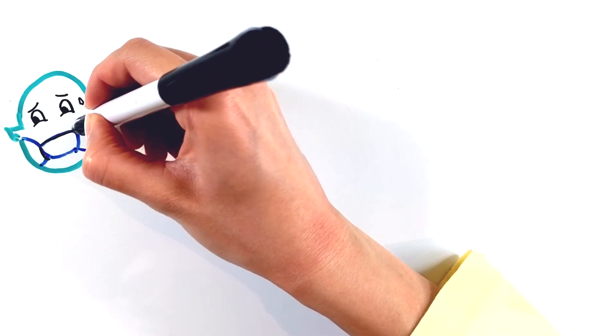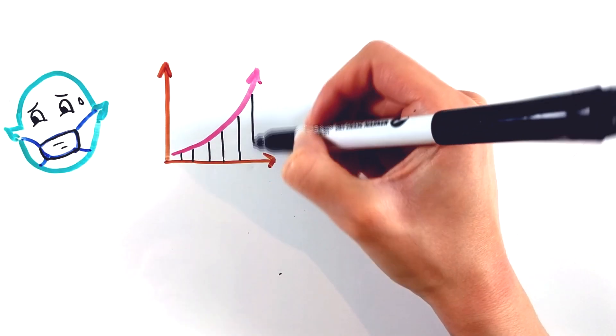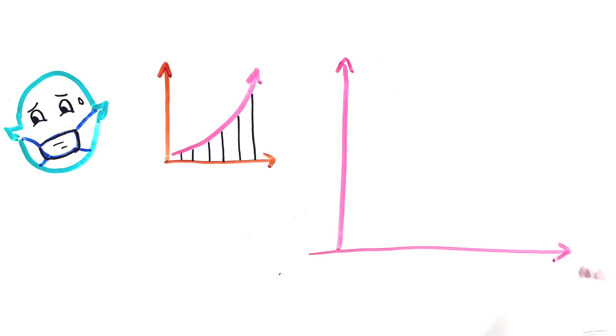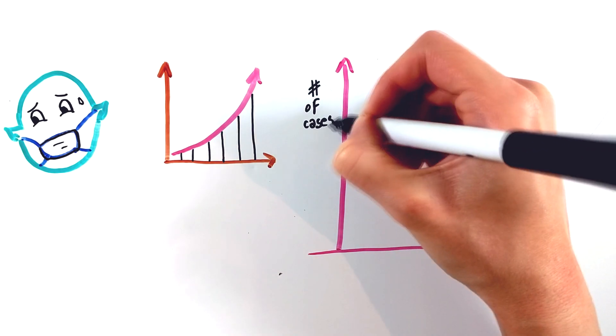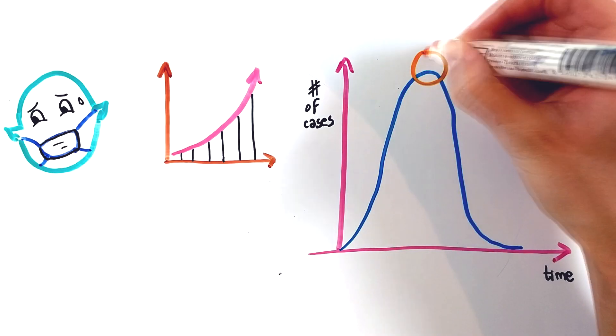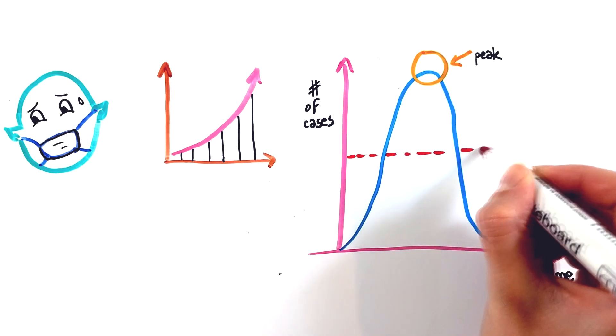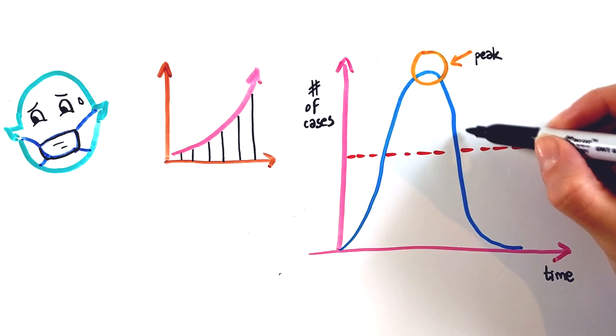When a viral outbreak happens, the number of patients begins to grow exponentially. The virus quickly spreads through the population and the number of cases goes up suddenly. In a brief period, the curve reaches a peak.